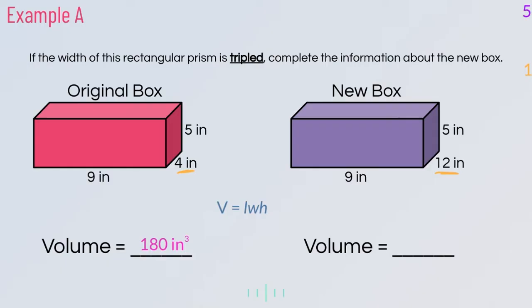Knowing that we've tripled one of the measurements, which is four, we can find the new volume by doing 180 times 3, giving us 540. We can verify this: 9 times 12 times 5 does give us 540. The shortcut is that when we triple one measurement, the volume also triples.